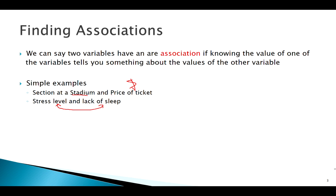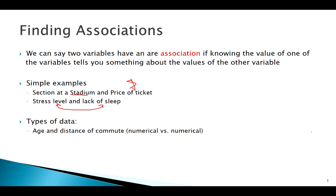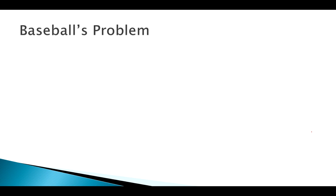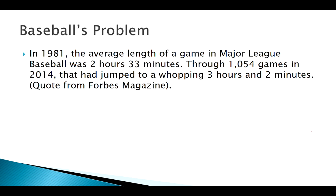Both of those examples are numerical — quantitative versus quantitative, like age and distance of commute. There are regression methods for other types of data, such as categorical versus categorical, or numerical versus categorical, but we're going to focus on this first type: quantitative versus quantitative.